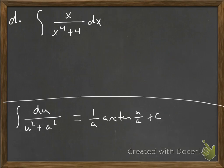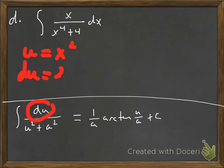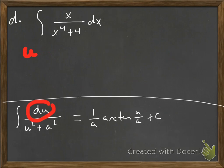Let's look at another integral — this one looks like an arc tangent, but we'll have to do a little trickery to get it into the right form. We need a du upstairs. Seeing x⁴ tells me u should be x², so du is 2x dx. We almost have that upstairs but we have just x, so we'll need to introduce a factor of 2 and divide by 2 to compensate.